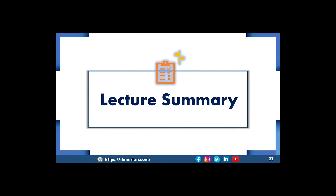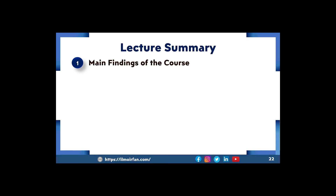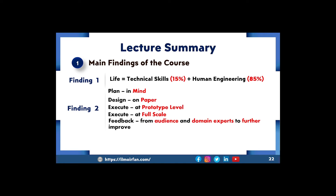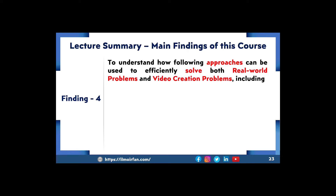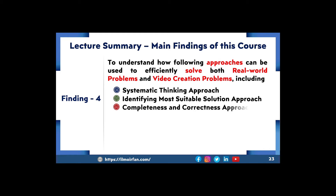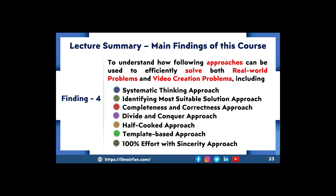Lecture Summary. In this lecture, I presented the main findings of this course. Finding 1: Life is equal to 15% technical skills plus 85% human engineering. Finding 2: Plan in mind, design on paper, execute at prototype level, execute at full scale, and feedback from audience and domain experts to further improve. Finding 3: To be successful in life, keep putting 100% effort with sincerity without bothering about the results. Finding 4: Understand how the following approaches can be used to efficiently solve both real-world problems and video creation problems — systematic thinking approach, identifying the most suitable solution approach, completeness and correctness approach, divide and conquer approach, half-cooked approach, template-based approach, and 100% effort with sincerity approach.